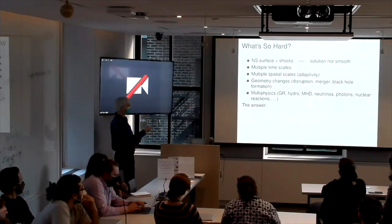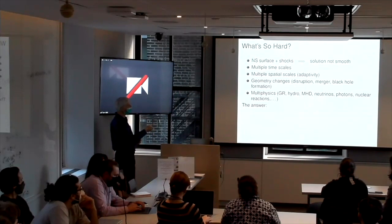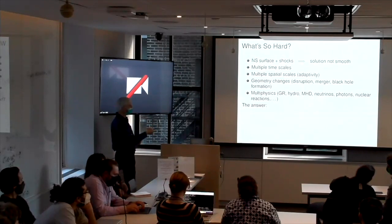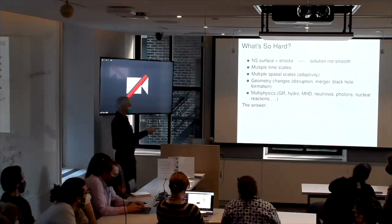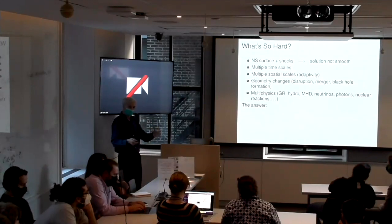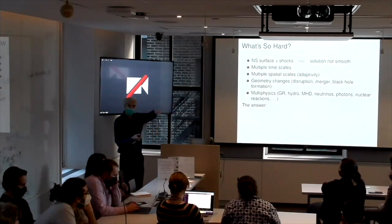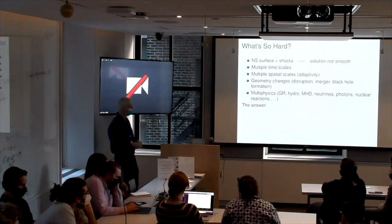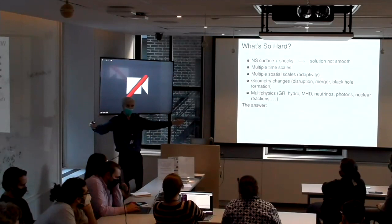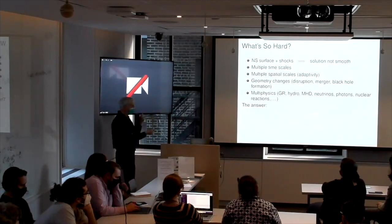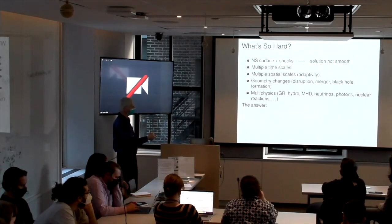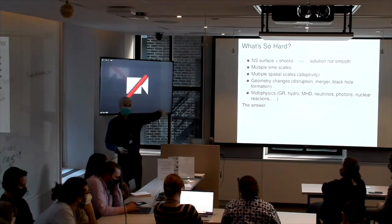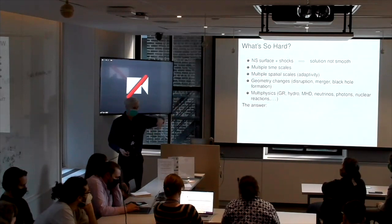And it's hard, right? The solution isn't smooth. You have surfaces and shocks. You have multiple timescales. You have multiple spatial scales. So you want to have an adaptive grid resolution. The geometry of the problem changes. You could have a disruption of a neutron star as it spirals into a black hole. There's a merger. You started with two objects. You end with one. Maybe you form a black hole out of a collapsing remnant. And then, of course, there's multiphysics. You want general relativity. You want hydrodynamics, MHD, neutrinos, photons, nuclear reactions, right? We're insatiable in our greed to add physics.